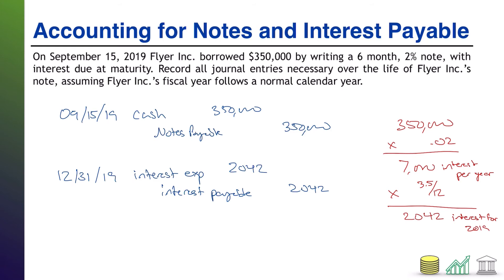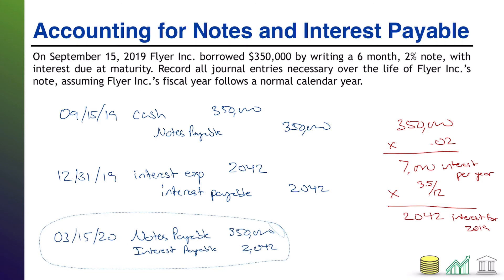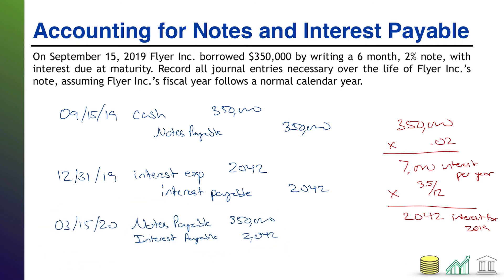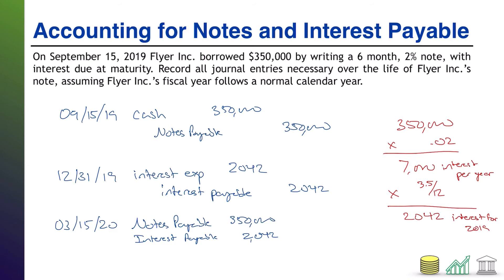The next time we need an entry will be the payoff when we get to March 15th of 2020. On this day, we are getting rid of the note payable — that liability will go away, the full principal balance. We are going to pay off that interest payable that we established at the end of last year: interest payable $2,042. And one last step — we incurred additional interest expense that we will also have to pay. Because remember, we recorded interest expense on December 31st, and it is now March 15th — it has been another two and a half months.